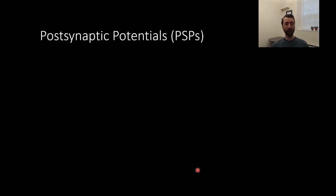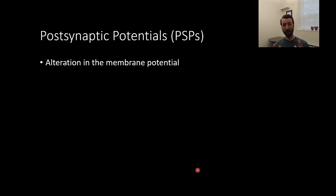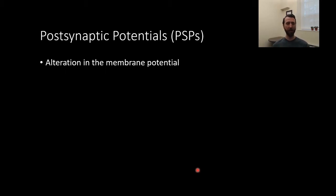Post-synaptic potentials are alterations in the membrane potential. The synapse is the gap between two neurons. The pre-synaptic neuron is the one releasing neurotransmitters across that gap, and the post-synaptic neuron is the one receiving them. Most neurons are both pre-synaptic and post-synaptic — they receive information and project information to other neurons. When I say pre- and post-synaptic, it's a relative term referring to a specific synapse.